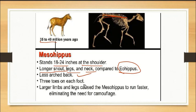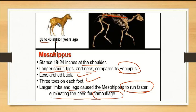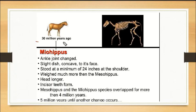Merychippus had three toes on each foot. It had larger limbs and legs to run faster. This eliminated the need for camouflage — the skin is plain, so without camouflage, it had to outrun predators. Miohippus, from about 30 million years ago, had an ankle joint change and stood at a minimum of 24 inches.